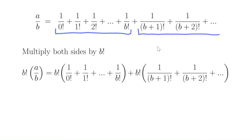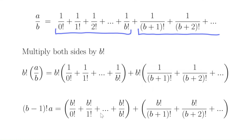We multiply both sides by b factorial. On the left-hand side, b factorial over b is just b minus 1 factorial — for example, 7 factorial divided by 7 gives 6 factorial. On the right-hand side, we distribute the b factorial. In the first part, each term is of the form a larger factorial divided by a smaller factorial, which is always an integer. For example, 7 factorial divided by 4 factorial is just 7 times 6 times 5, which is an integer. So summing those terms gives one big integer.